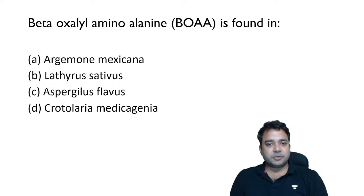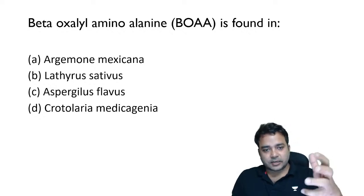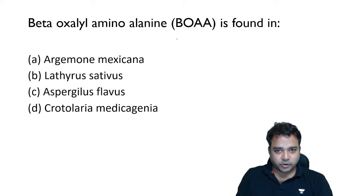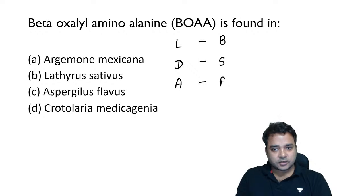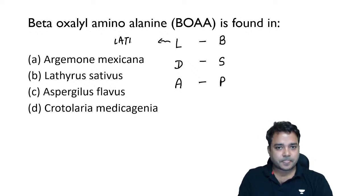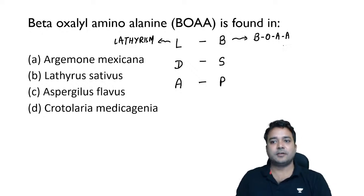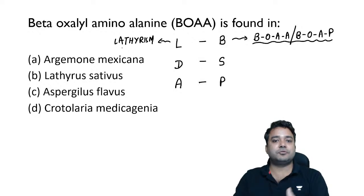Beta-oxalyl amino alanine is found in — this is in the area of food adulteration. Using the mnemonic Lucknow Development Authority (LDA) and BSP: L for lathyrism, B for beta-oxalyl amino alanine (BOAA) and beta-oxalyl amino propionic acid (BOPA) — these lead to lathyrism. Lathyrus sativus is used as an adulterant for normal pulses, commonly called khesari dal.